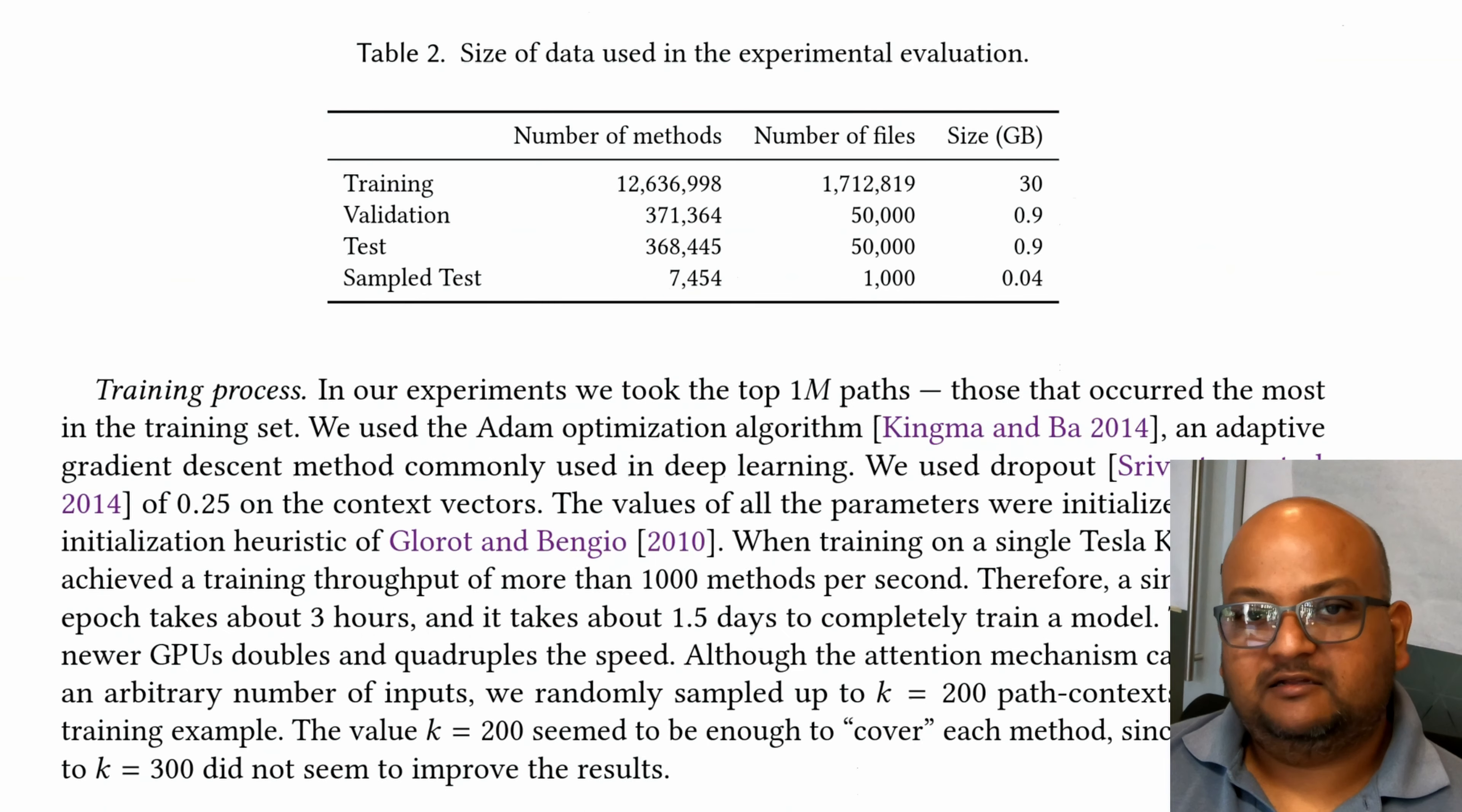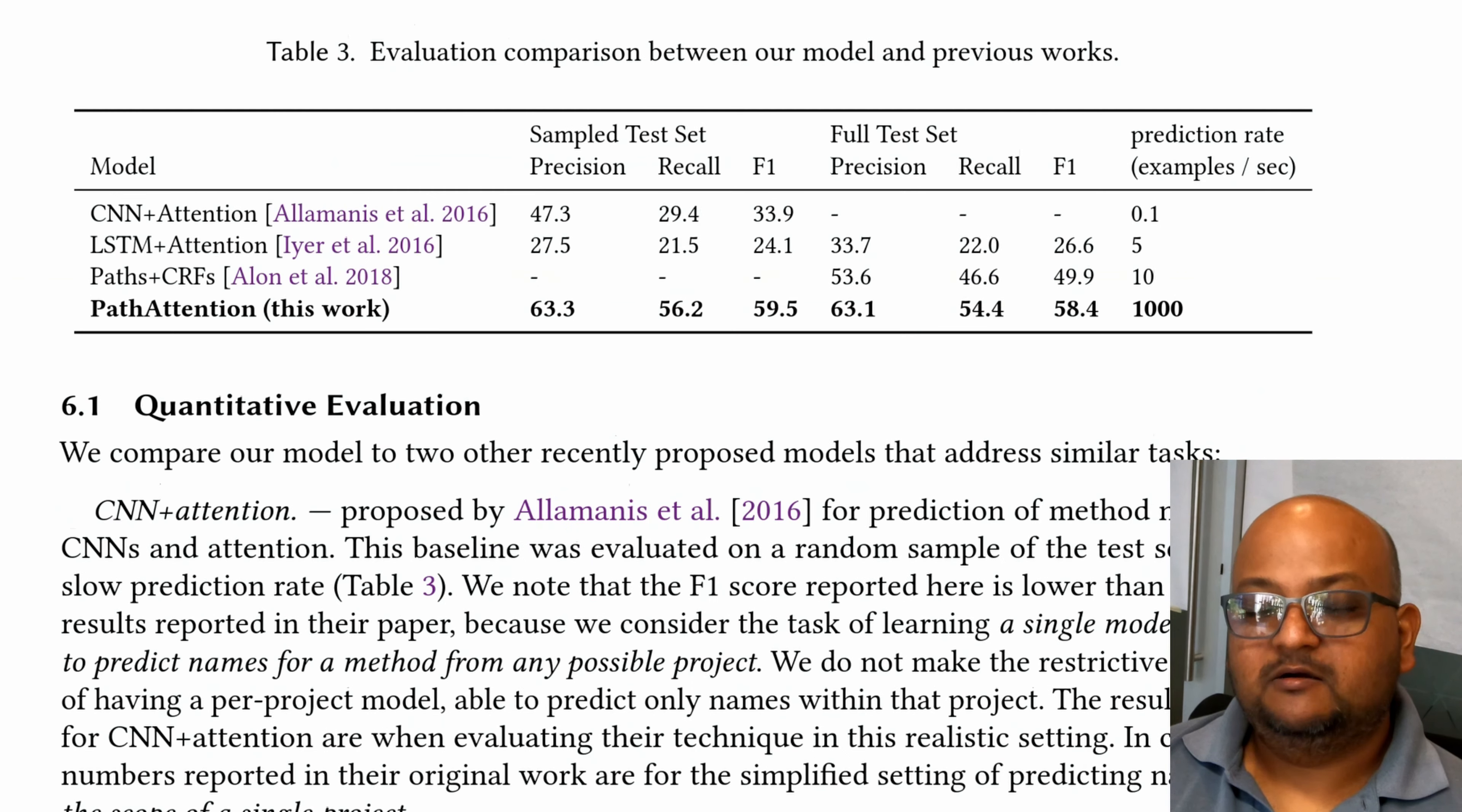For their training data, the authors downloaded a lot of repositories from GitHub spanning over 1.7 million files and about 12.6 million methods. We see that just in terms of the speed of prediction, this technique is about two orders of magnitude faster compared to previous techniques in terms of how many predictions it can make per second.